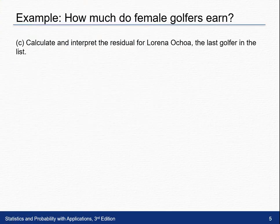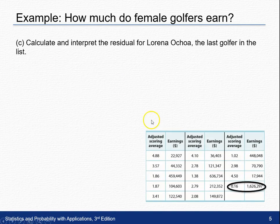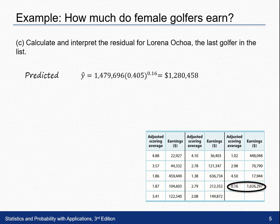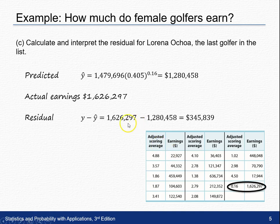In Part C, calculate and interpret the residual for Lorena, the last golfer in the list. Looking at our list, her adjusted scoring average is 0.16 and her earnings were over one million. To calculate the residual we need the predicted value from the model, so we plug in 0.16 for her adjusted scoring average. Her actual earnings were $1,626,000 and the residual is actual minus predicted. Subtracting these two we get $345,839.